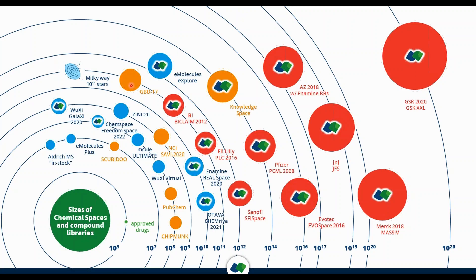All those publicly accessible databases are shown in orange bubbles — accessible to everybody. Many companies have created their own services where they synthesize compounds and sell them to pharmaceutical companies: e-molecules, Vitas-M Virtual, MCule Ultimate, and the ZINC databases of commercially available compounds — shown in blue. In red, we have proprietary spaces — things that companies have created for their own investigations that a normal person would not easily access.